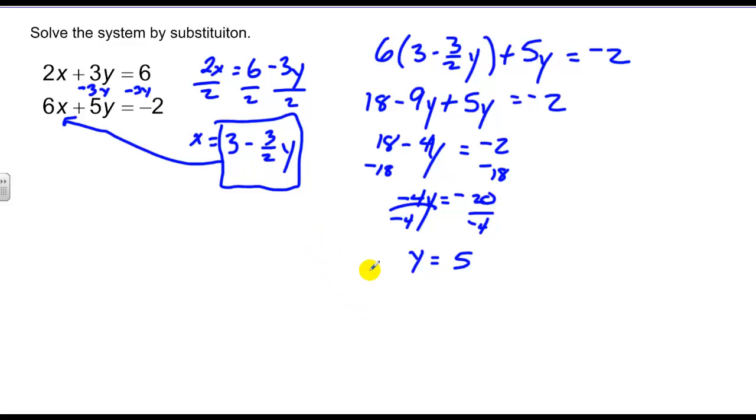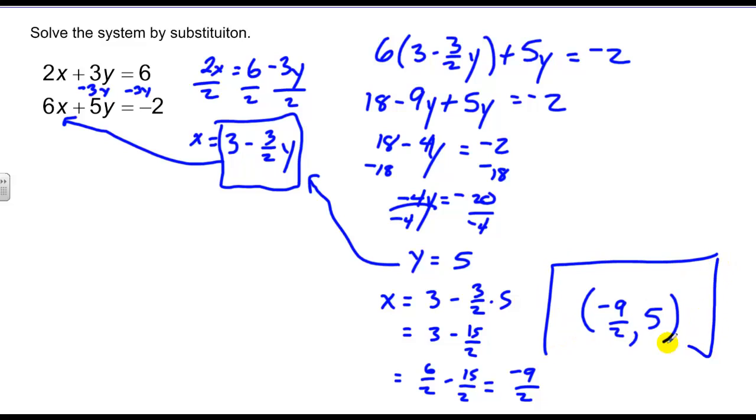I plug back into any of the equations. I'll just plug it right into here. I get x equals 3 minus 3 over 2 times 5, which goes 3 minus 15 over 2. I need a common denominator. 6 over 2 minus 15 over 2, which is equal to negative 9 over 2. And that's my x value. So my ordered pair solution is negative 9 halves and 5. Won't always have nice integer values.